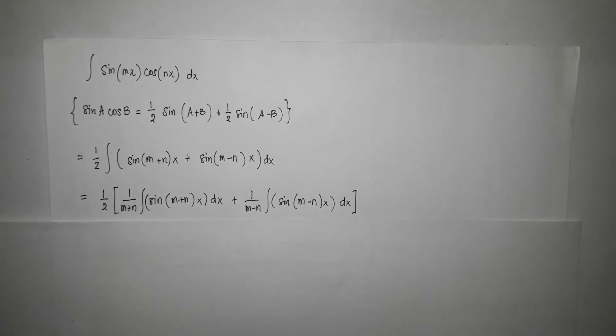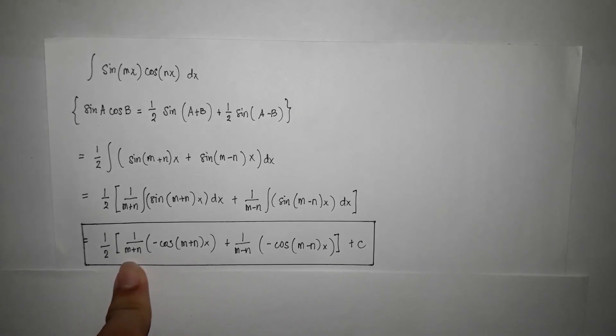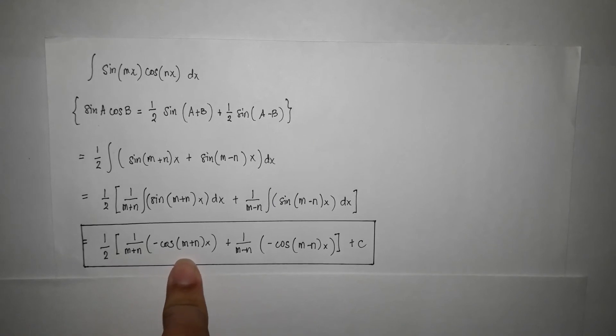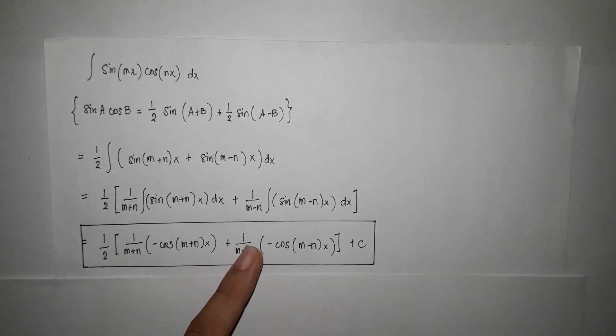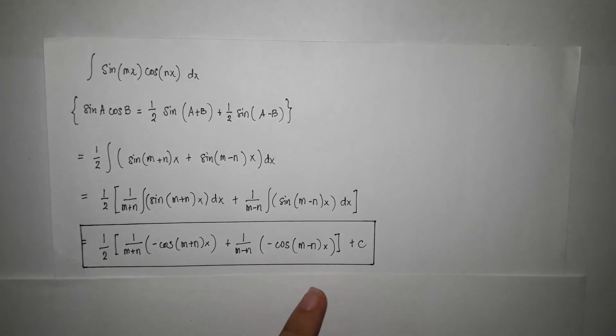So the integral of sine is negative cosine. So now we have for our final answer 1 half times 1 over m plus n times negative cosine m plus n times x plus 1 over m minus n negative cosine m minus n times x plus c.